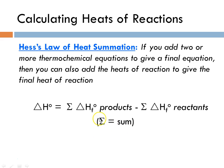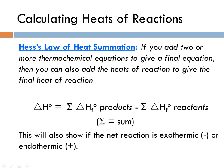The Greek letter sigma is used for sum. This also shows us whether the net reaction is exothermic, where the delta H is a negative number, or endothermic, where the delta H will be a positive number.